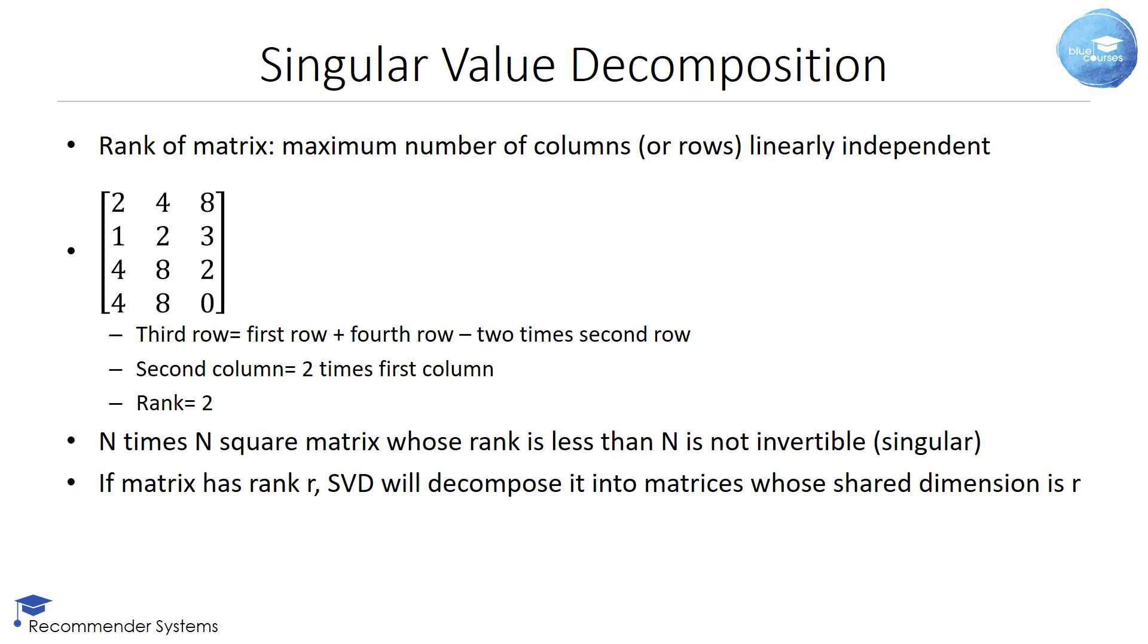Consider the matrix shown here. As you can see, the third row equals the sum of the first and fourth row minus two times the second row. Likewise, the second column equals two times the first column. Hence, the rank of this matrix is two.